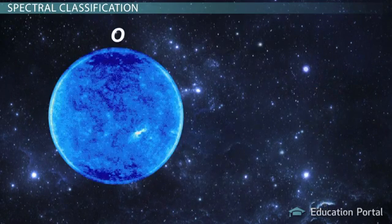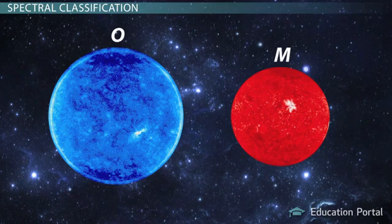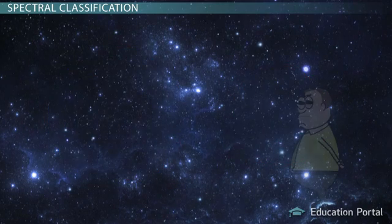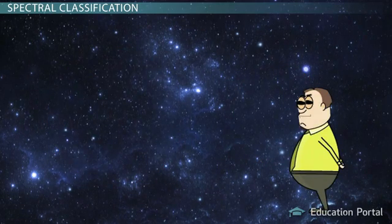The O stars are the bright, hot, blue stars, and the M stars are the dimmer, cooler, red stars. A common mnemonic for remembering the order of the classification is: